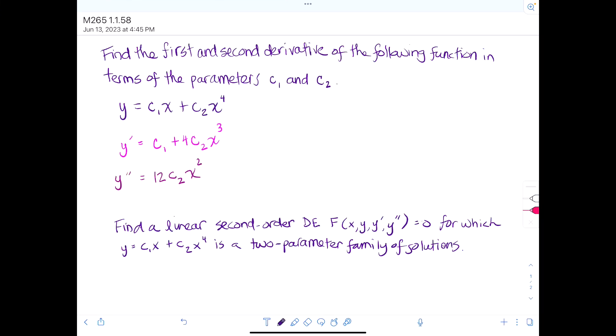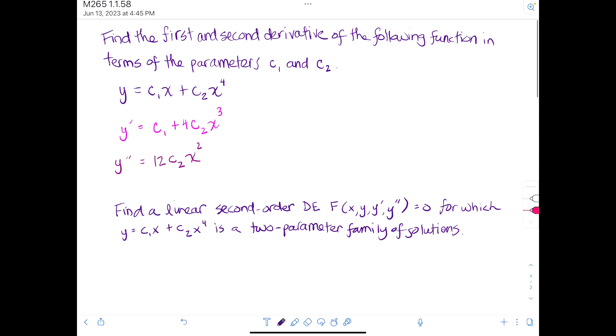So next we want to use this information to find a linear second order DE in terms of capital F at x, y, y prime, and y double prime equal to zero, for which y equals c1 times x plus c2 times x to the fourth is a two parameter family of solutions.